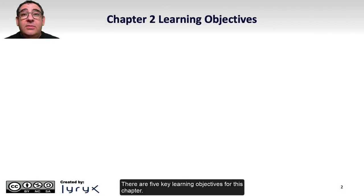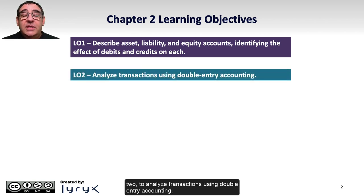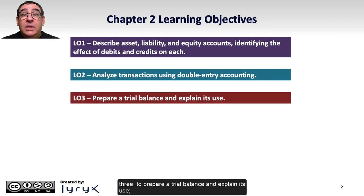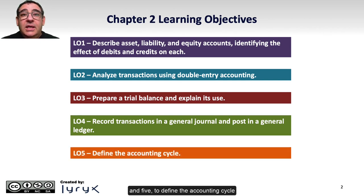There are five key learning objectives for this chapter. One, to describe asset, liability, and equity accounts and identifying the effect of debits and credits on each. Two, to analyze transactions using double-entry accounting. Three, to prepare a trial balance and explain its use. Four, to record transactions in a general journal and post them to the general ledger. And five, to define the accounting cycle.